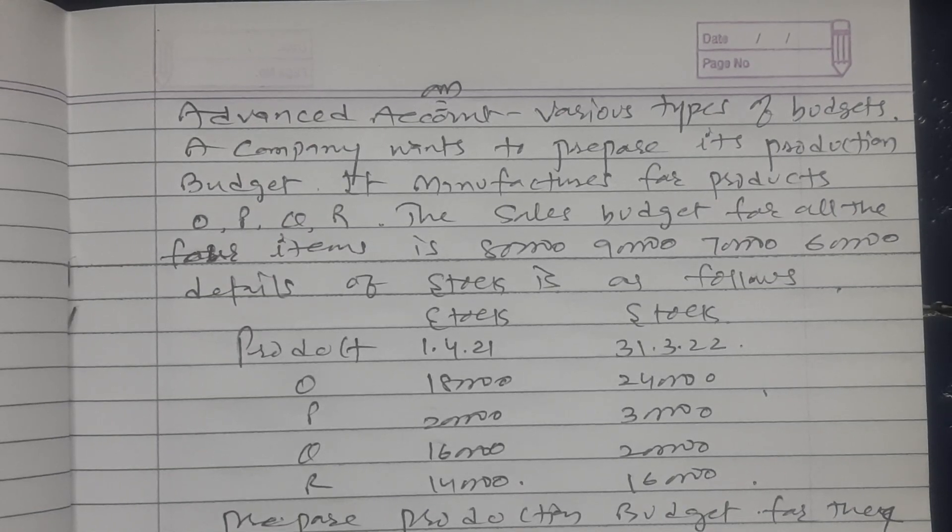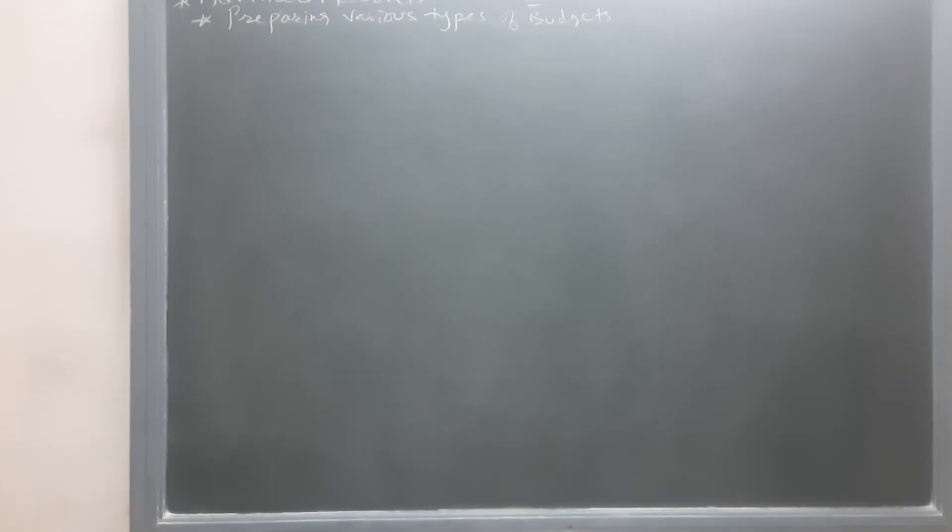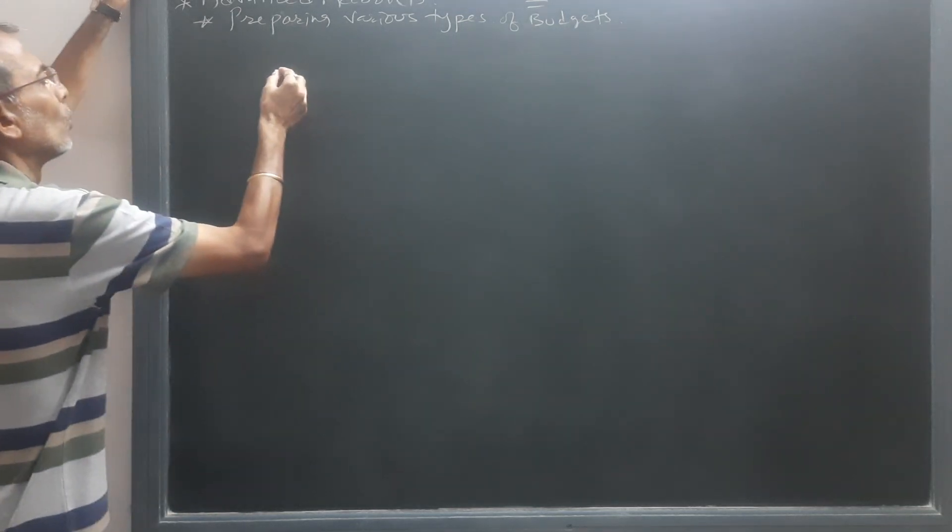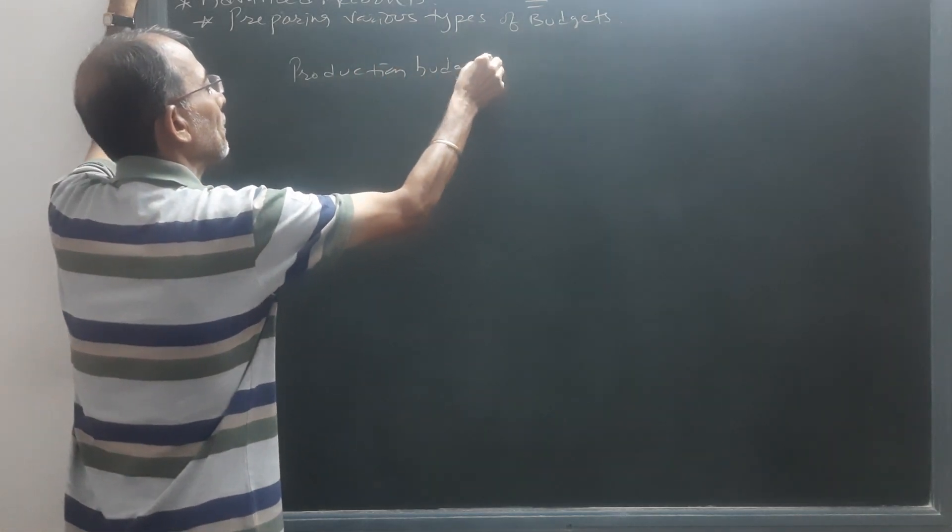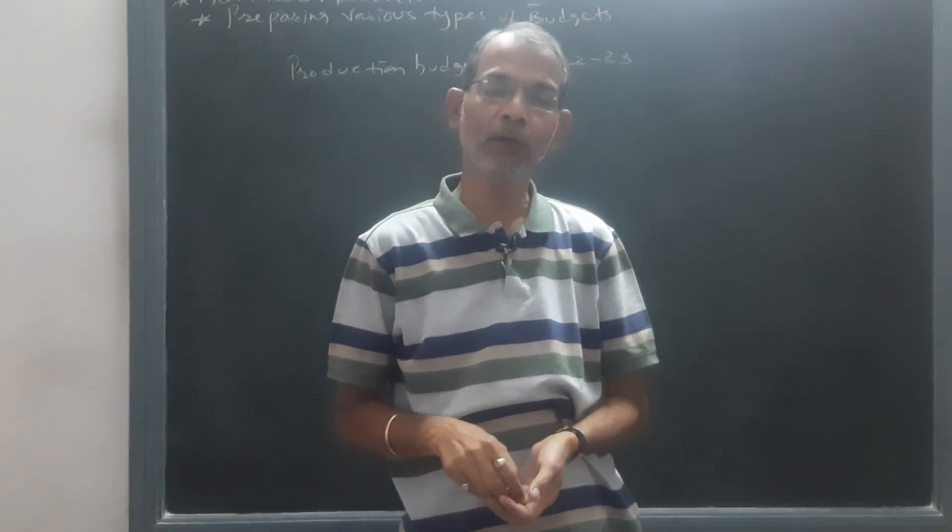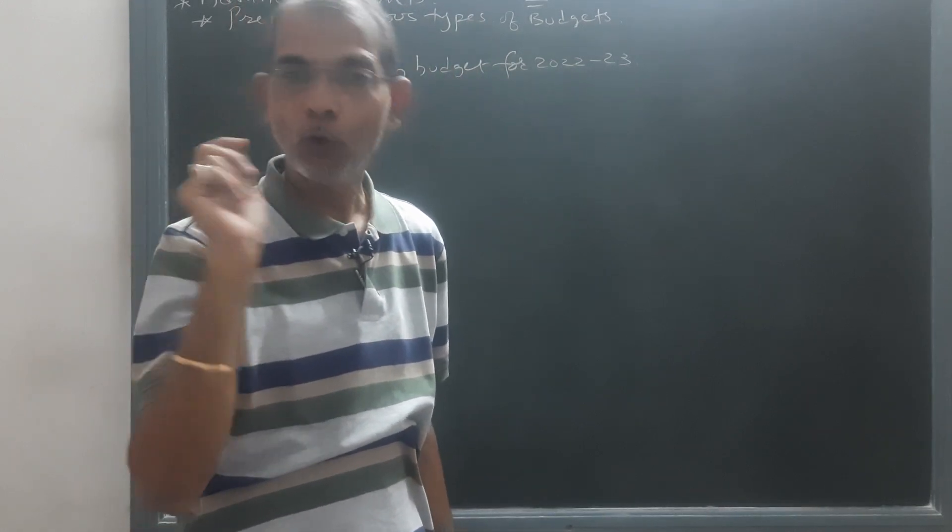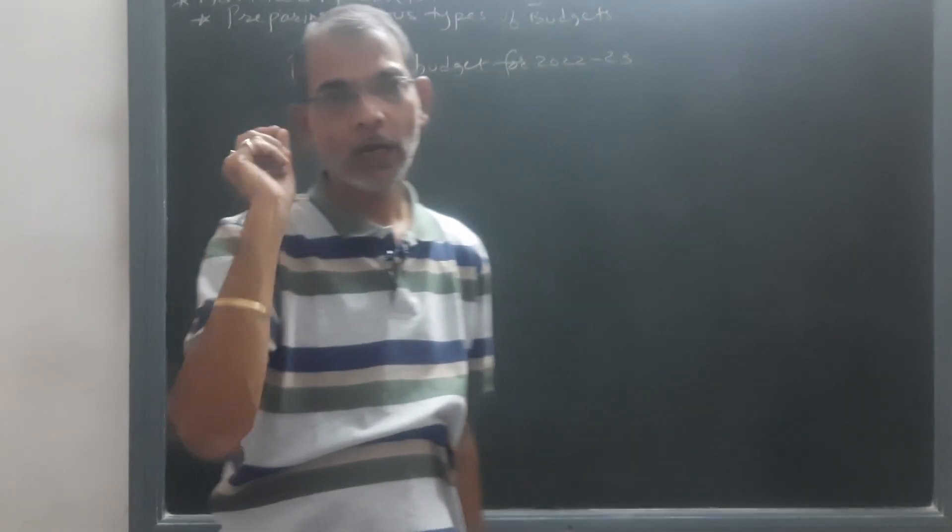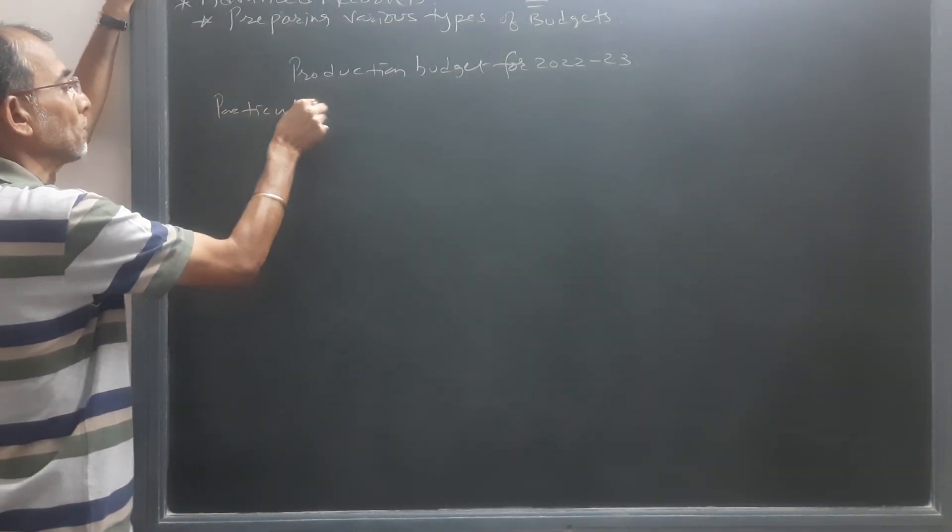Now we will draw production budget for 2022-23. To find production, we need to add closing stock to sales, and from that we will subtract opening stock. In this way we will come to know production to be done for each and every product.